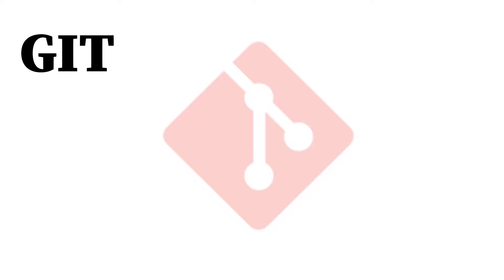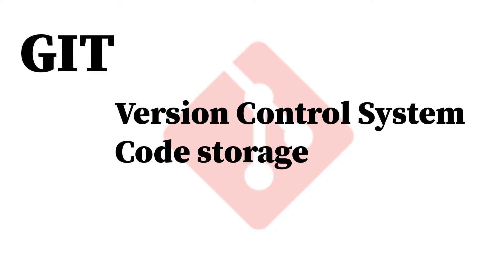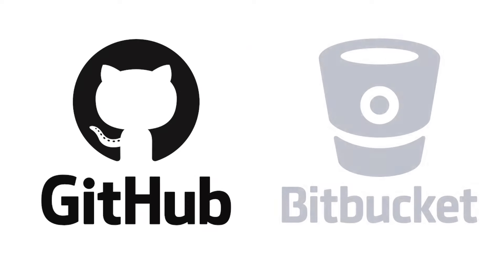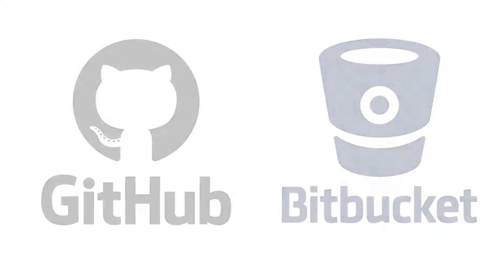Git is a version control system that lets you store all your files and track all changes done to each file. Every time you make a change to your files, Git creates a version for you. This lets you revert to a specific version if you ever need it. Git is software that runs locally on your computer and can have an online host such as GitHub or Bitbucket, so you could store all your files on a remote host.